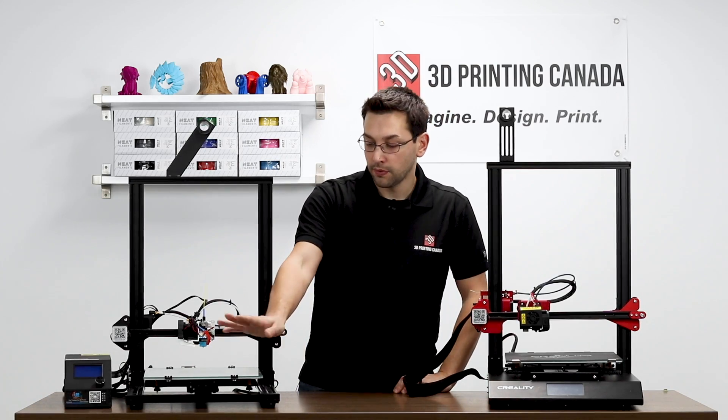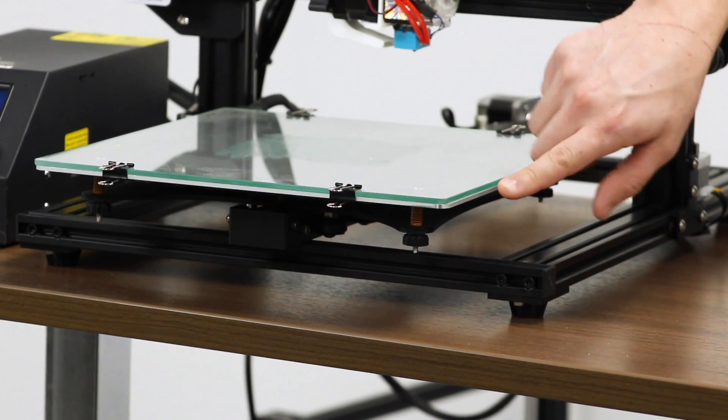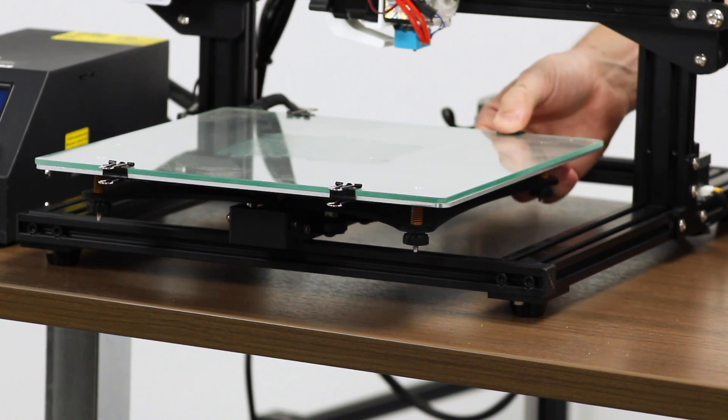So on the CR-10S, the bed is a three-millimeter thick glass plate on top of an aluminum bed. And it's held on there with these binder clips.